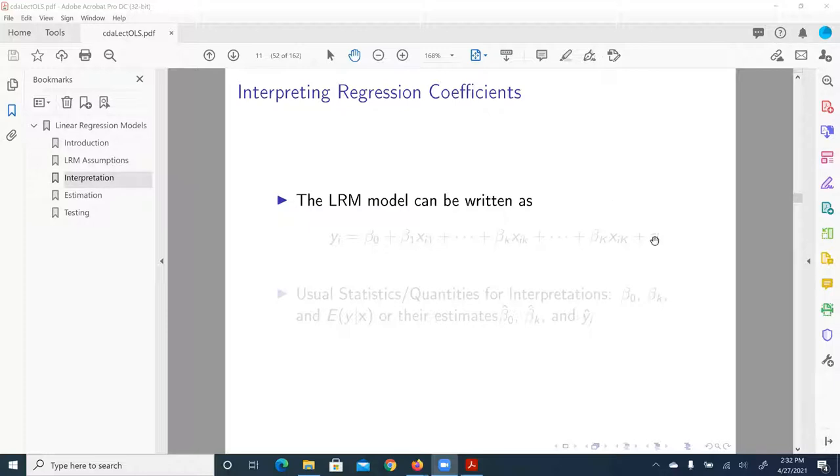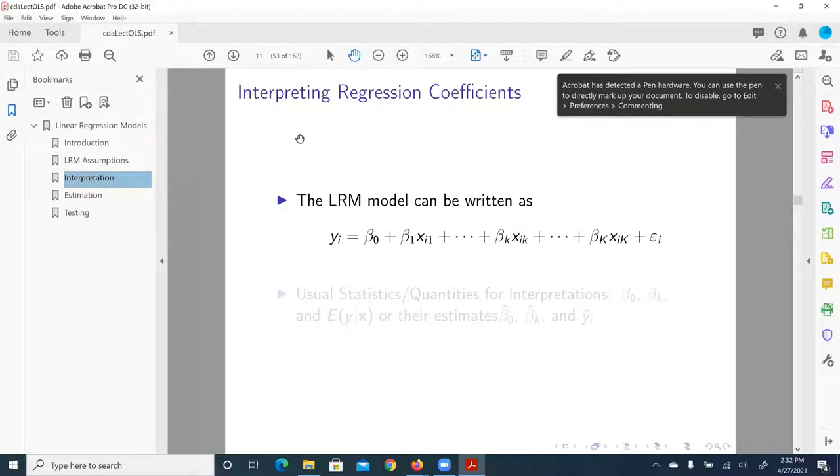So let's say the model, the structural model is specified as y_i equal to beta_0, beta_1 x_i1, beta_2 x_i2, etc.